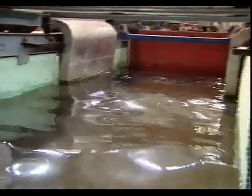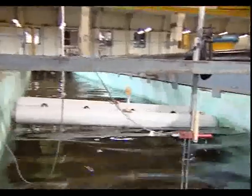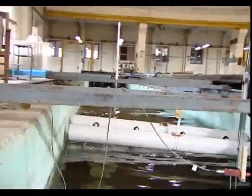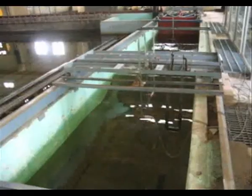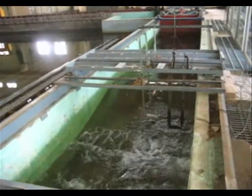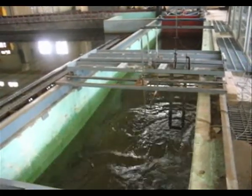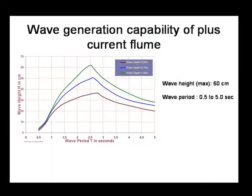Waves and currents together can be generated in the wave current flume. It is 30 meters long, 2 meters in width and 1 meter deep. It is fitted with a piston type wave maker. Unidirectional, regular and random waves can be generated. This is a typical experiment conducted on an offshore pipeline to study its interaction with waves.